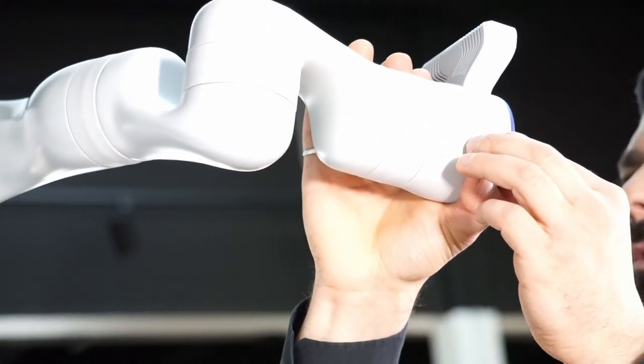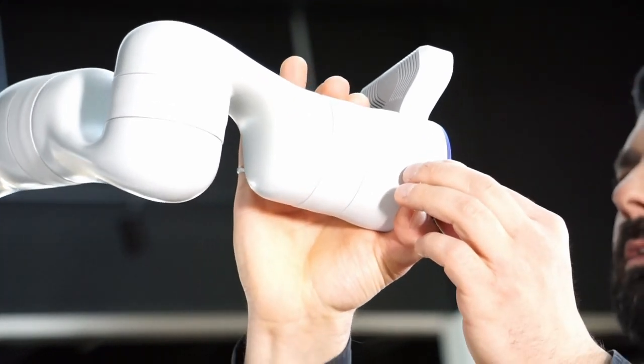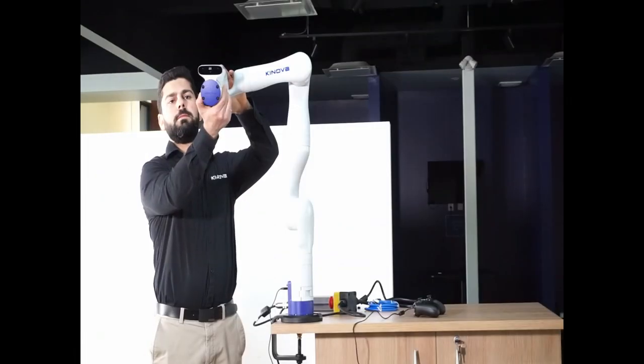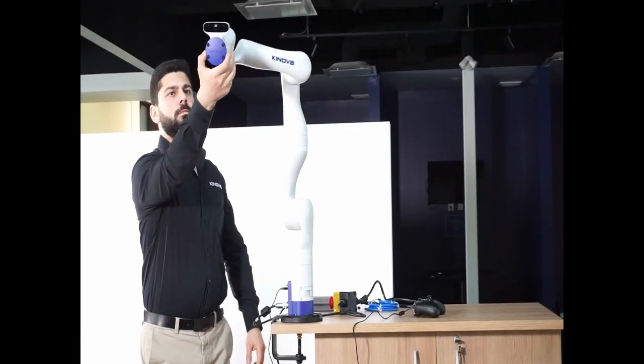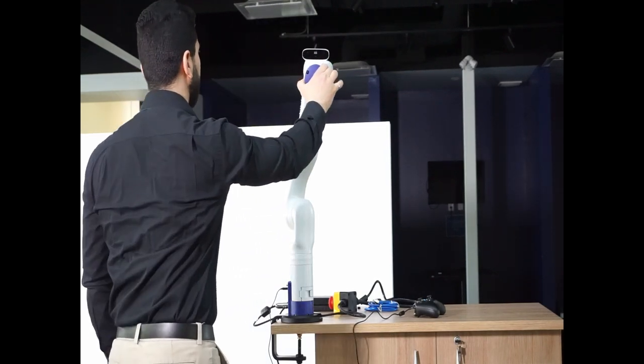When you press and hold the left hand side button, you will control your robot in joint admittance by applying force by hand to move each joint.